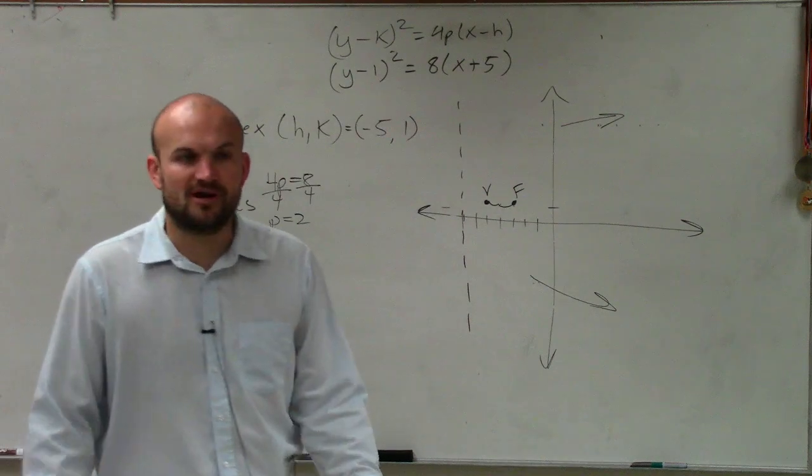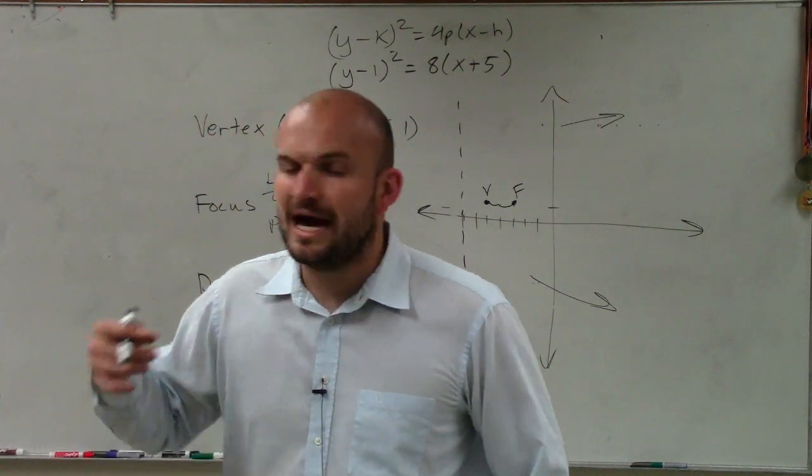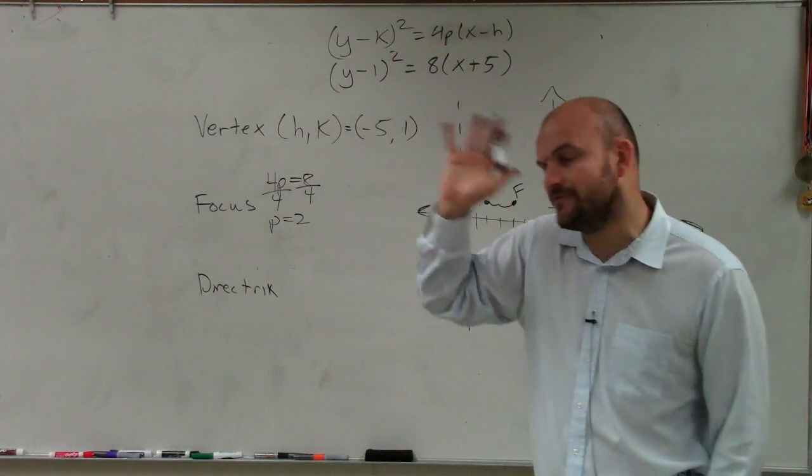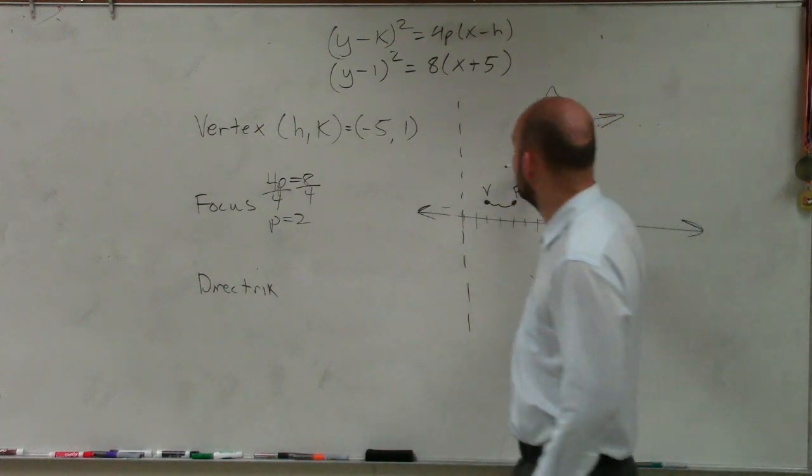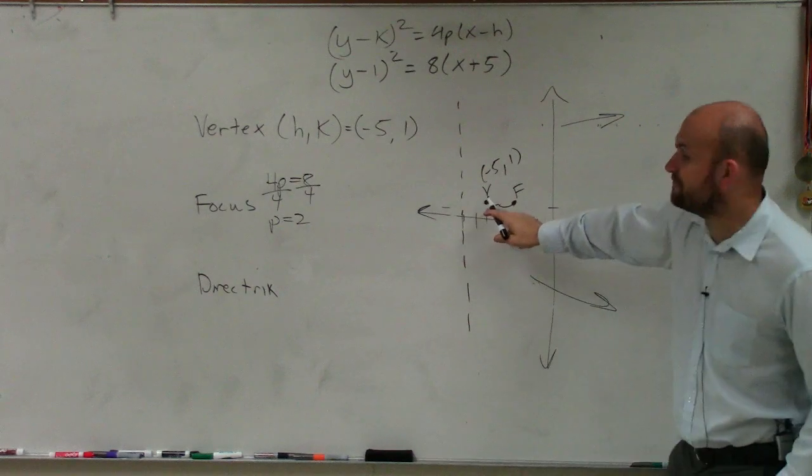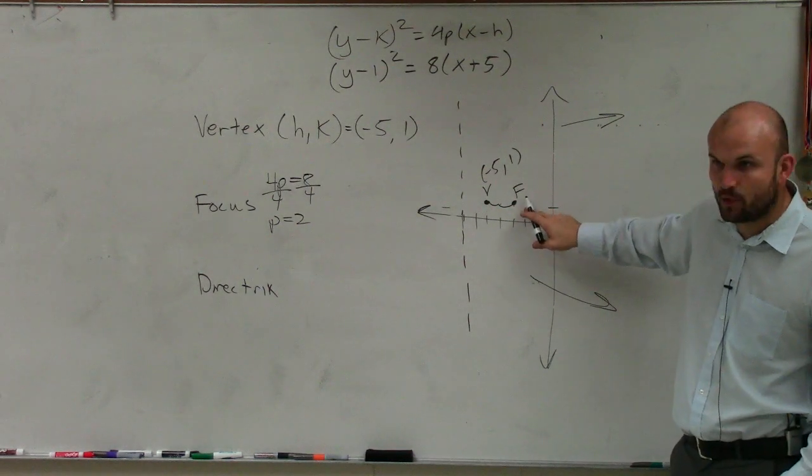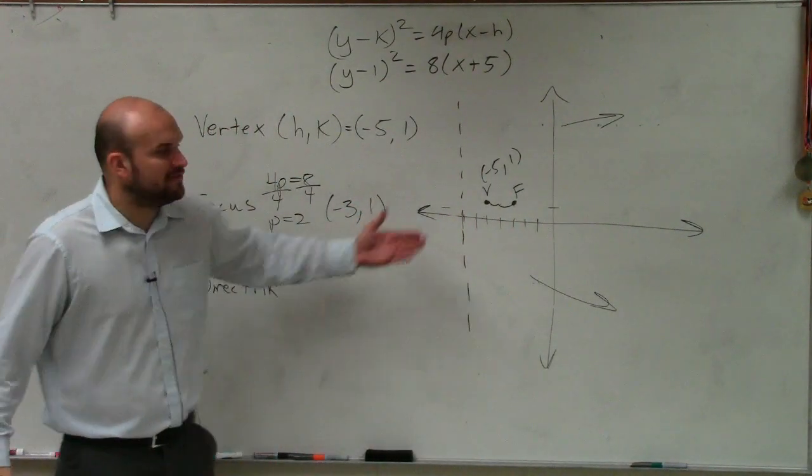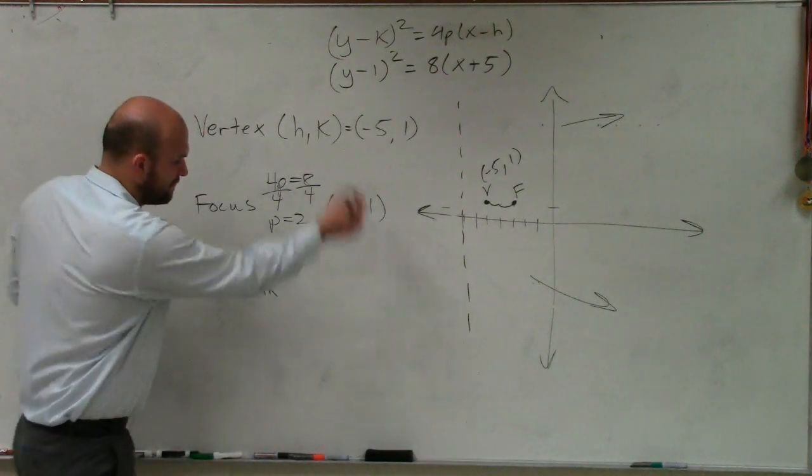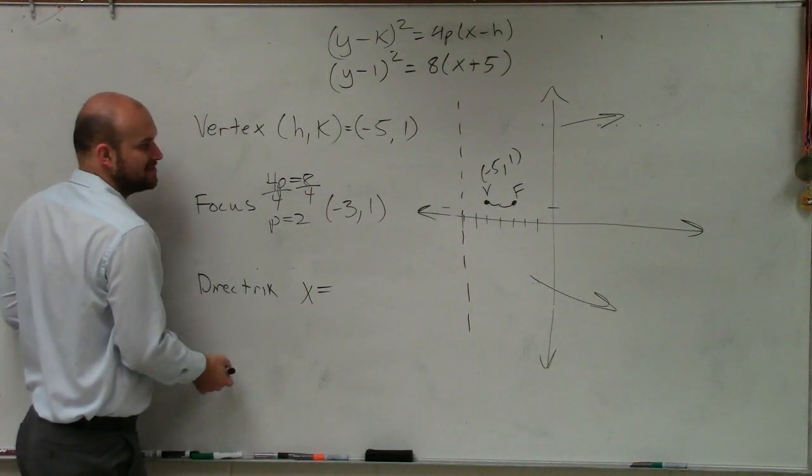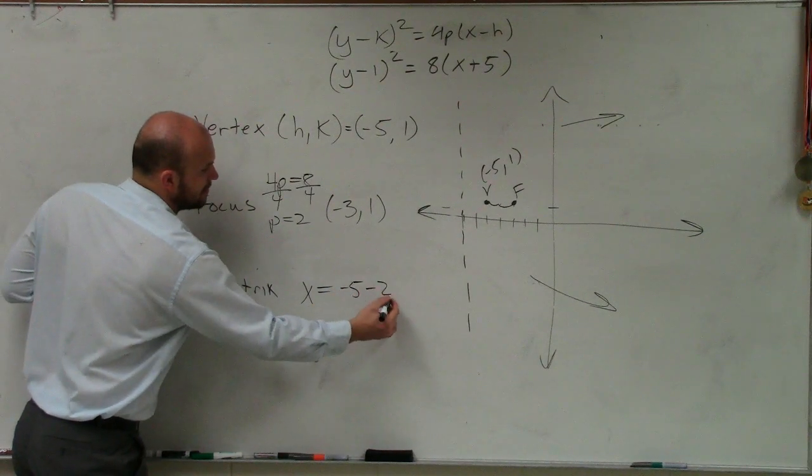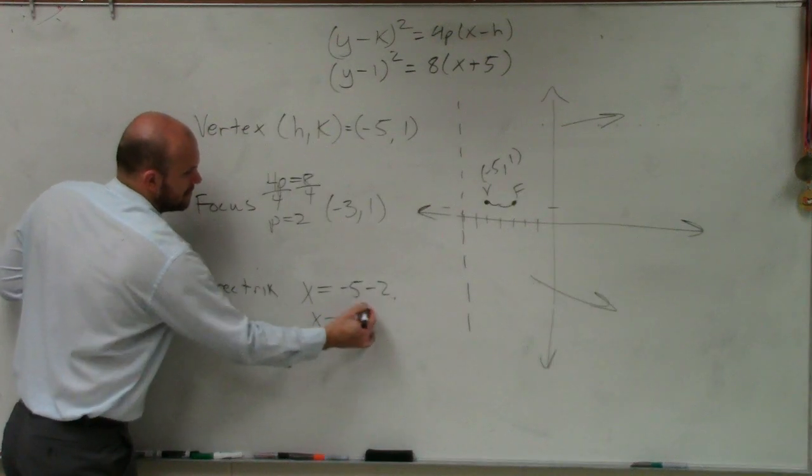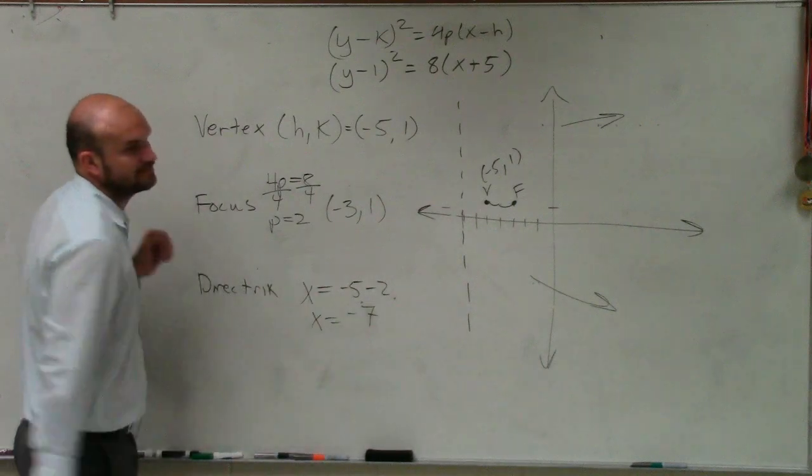Now, what's so important about this is I don't want you to get caught up, Lucas, on trying to remember, oh, is it h plus p, is it k minus p? Like, forget about it. Look at the graph. This point is at (-5, 1). If I move my focus over 2 to the right, my focus point is now going to be (-3, 1). And now if I move my directrix 2 to the left, I'm going to have a vertical line, which is x equals h minus p, which is -7.